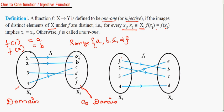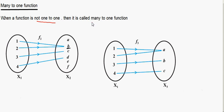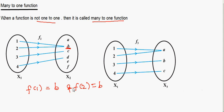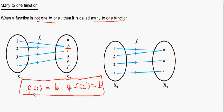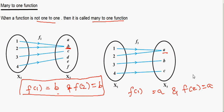If you don't have such a function — that is, when the image is the same for two different values of x — then you call that function many-to-one. For example, b is the image for both 1 and 2: f(1) = b and f(2) = b. Similarly, f(1) = a and f(2) = a. When the same image appears for two different values of x, that function is called a many-to-one function.